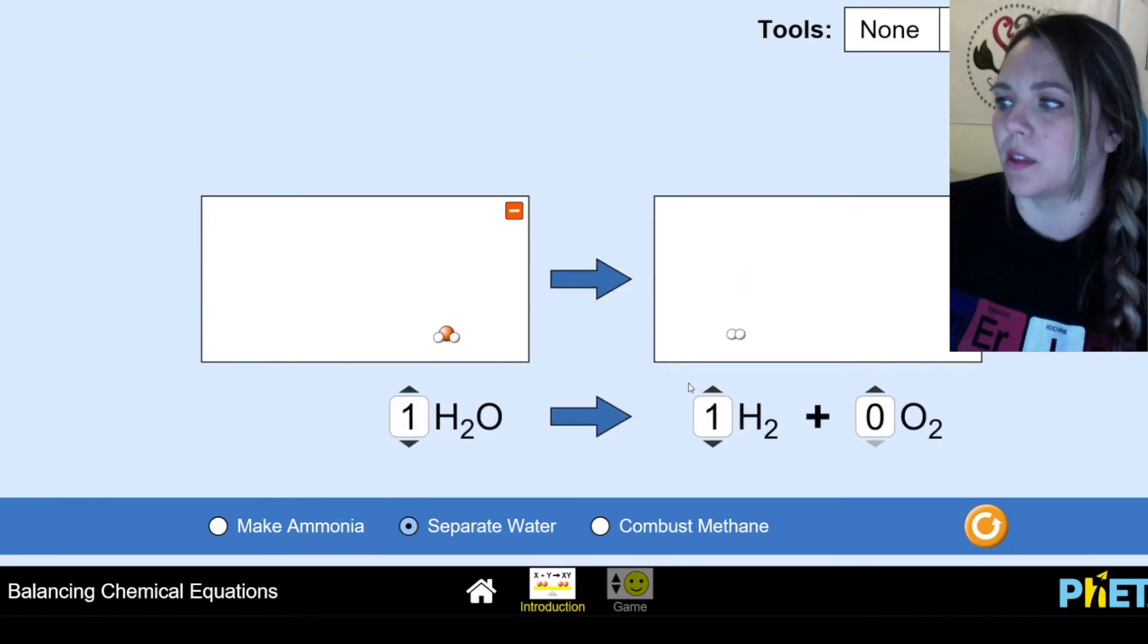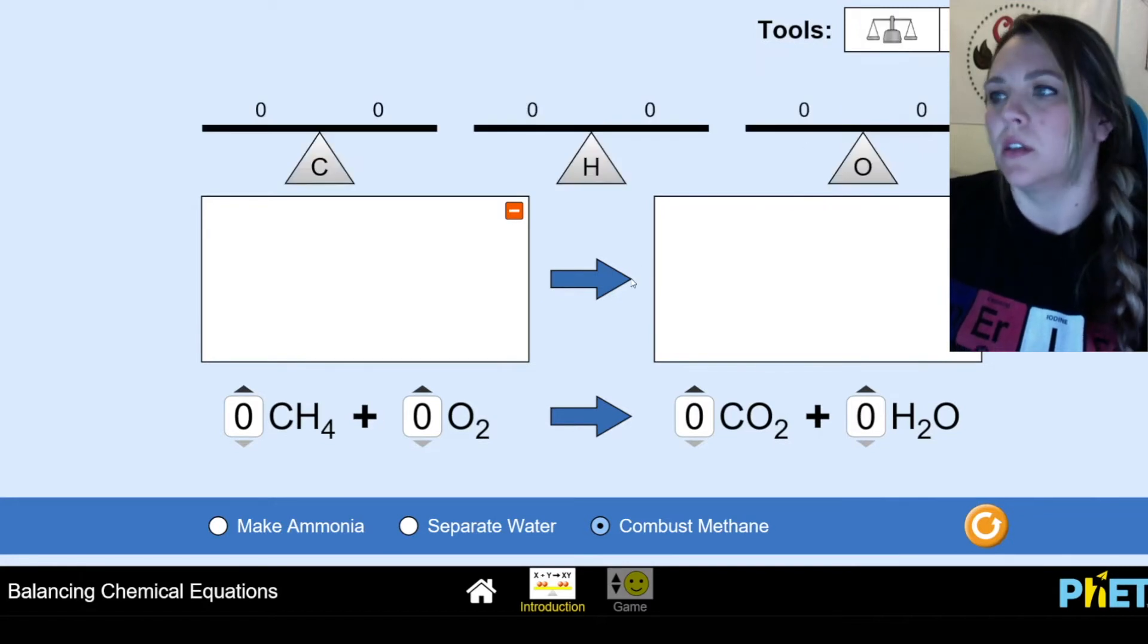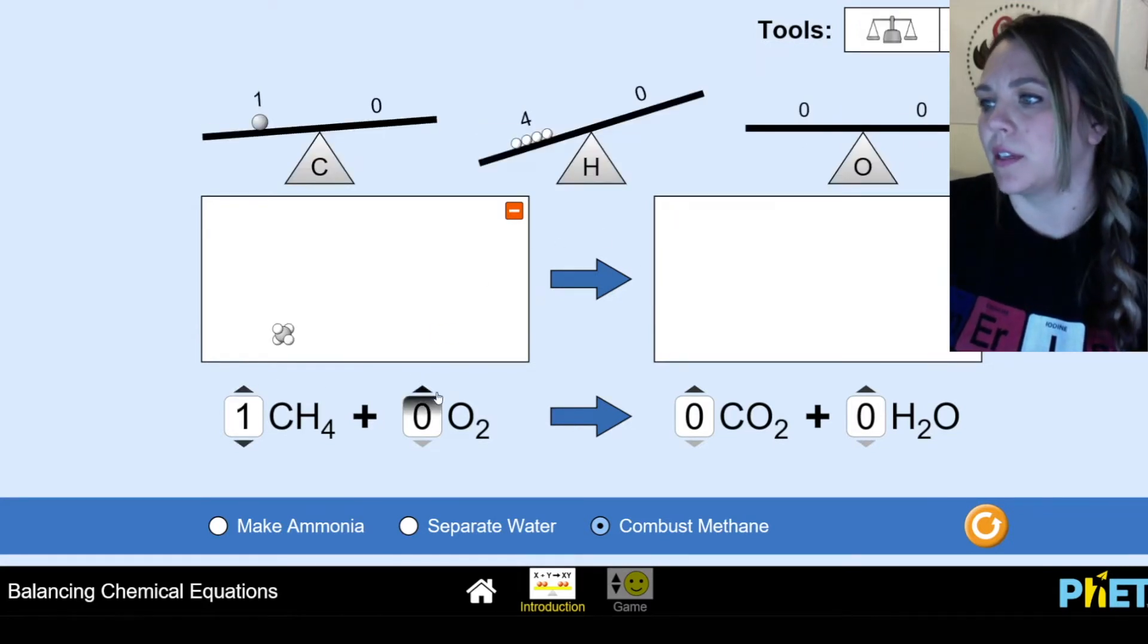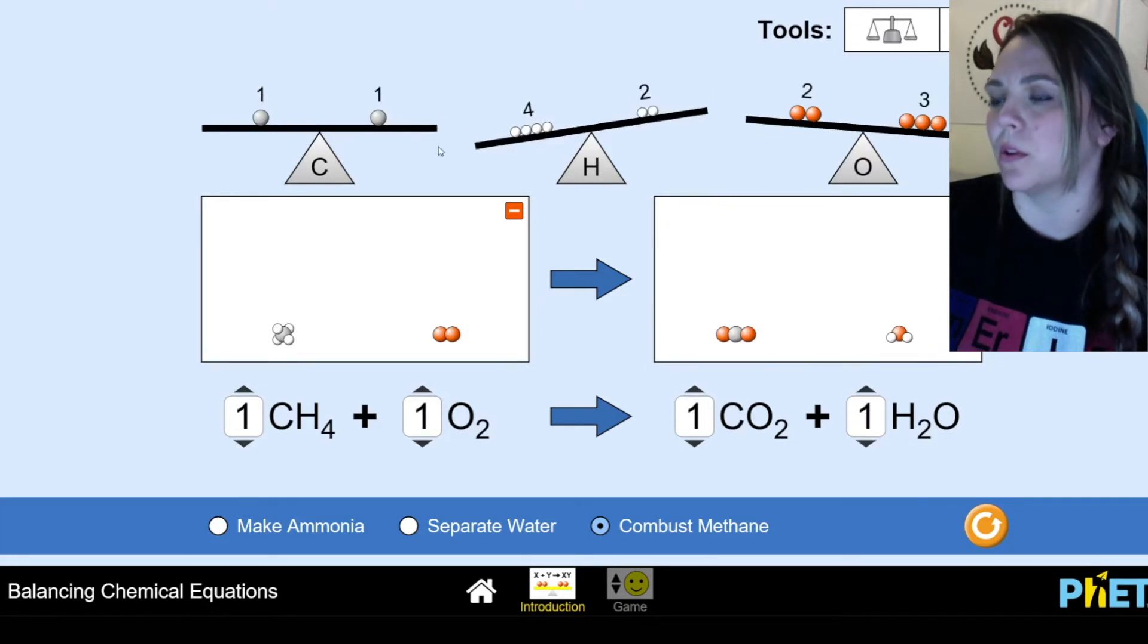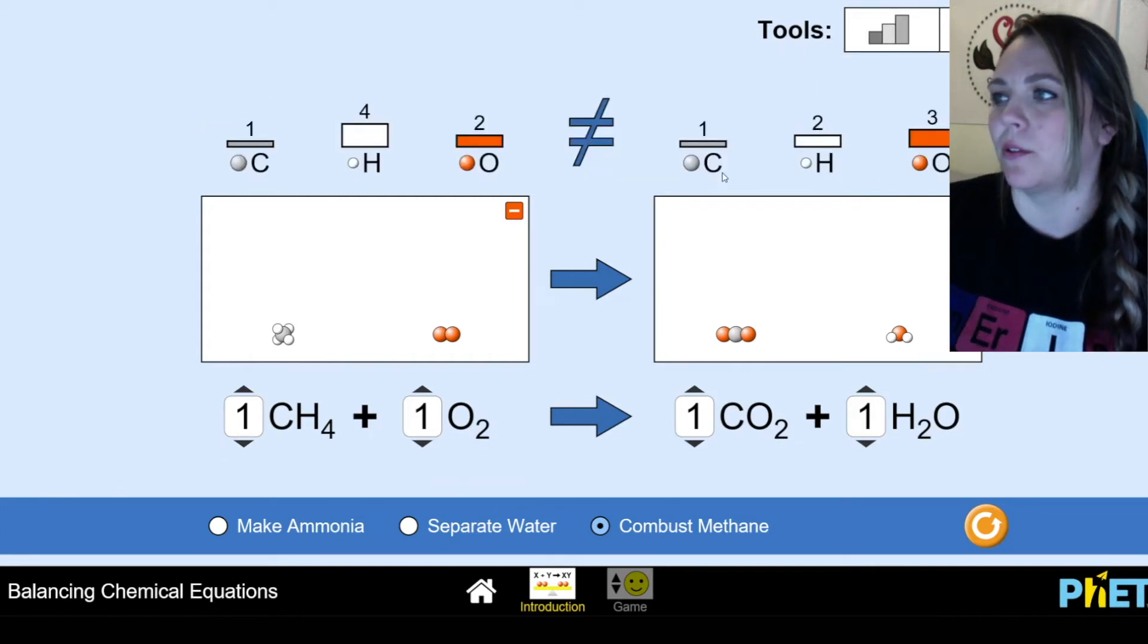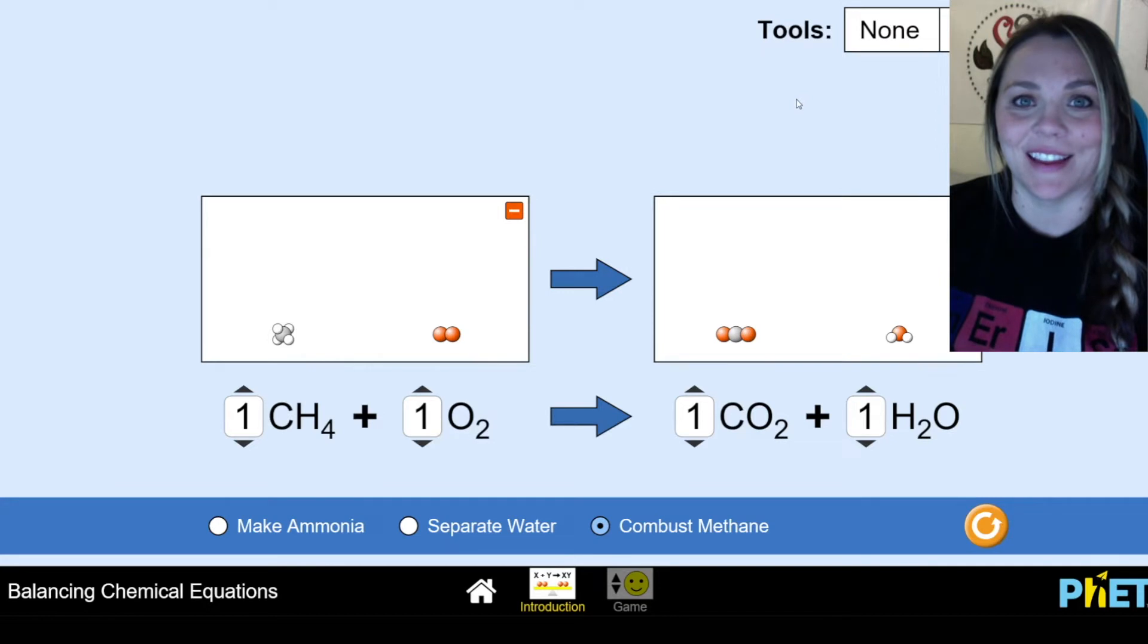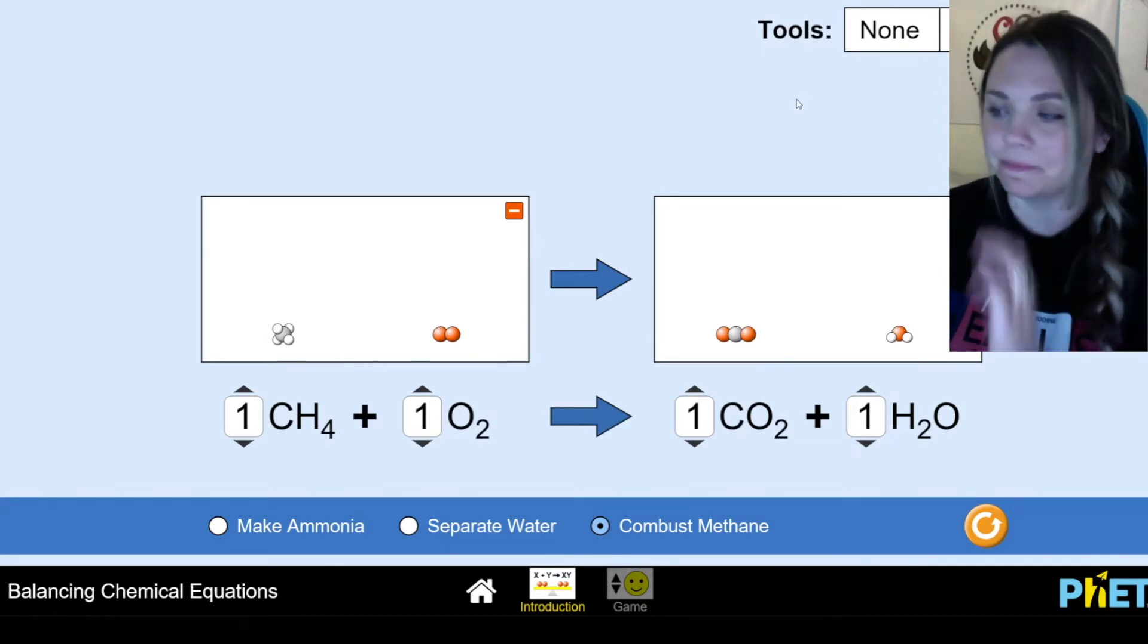Then you can separate water, do the same thing. Start with one of everything. Combust methane, start with everything. And if you wanted to see some tools, it's kind of other things to look at to help you out. If you start with one of everything you can see my carbons are balanced reactants to products, hydrogens are not balanced, oxygens are not balanced. So if you like looking at a scale or a balance beam to try and help you figure stuff out, by all means do that. If you'd rather look at it in a bar graph, there's another tool for you. I honestly think it's easier to just have none and then you don't have stuff crowding up your screen.